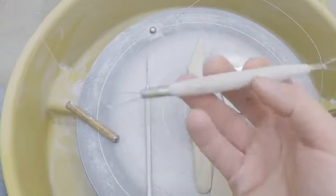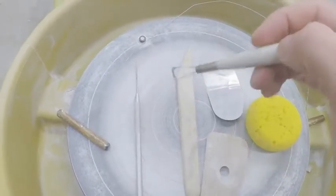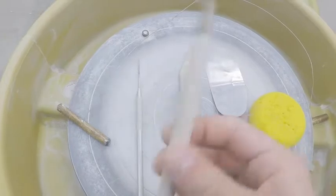The ribbon tool, we're not going to be using until we go to trim the base of the piece to make a foot ring. So during the actual throwing process when you begin, you won't be using this guy very much, but it will be useful later.